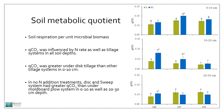Soil metabolic quotient showed some interesting trends. Specifically, soil metabolic quotient was significantly influenced by both nitrogen application and tillage systems. In the top 10 cm, it was higher under disc and sweep tillage than under plow tillage, and nitrogen application increased soil metabolic quotient. In lower soil depths, nitrogen application increased metabolic quotient, but the response was higher under plow tillage than under the other tillage systems. For example, in 20 to 30 cm soil depth, the only difference in nitrogen rate was observed in plow tillage, but no difference in disc and sweep tillage systems.